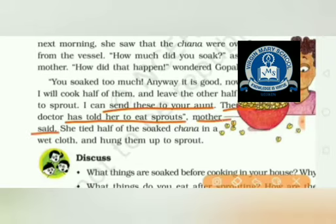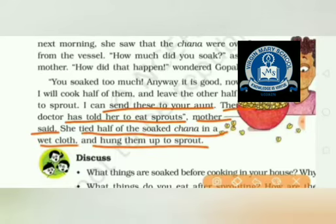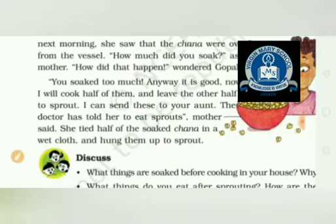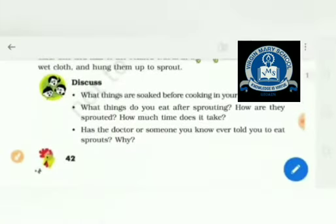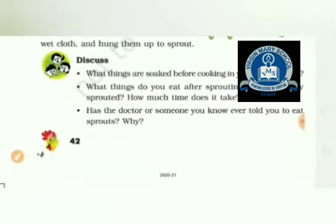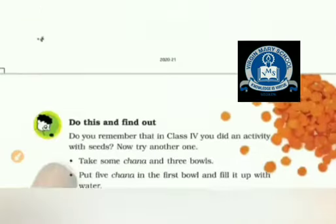Mother tied half of the soaked chana in a wet cloth and hung them up to sprout. In the next video, we will cover all the questions and answers related to this chapter.